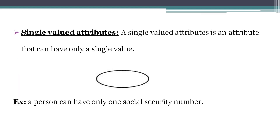First one: Single Value Attribute. A single value attribute holds only one value for that attribute. For example, if you have a person entity, a person should have only one identity number or one social security number. Because it holds only one value, it is called a single value attribute.